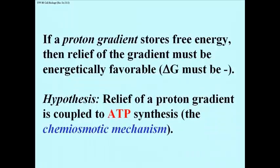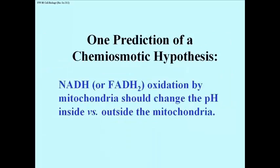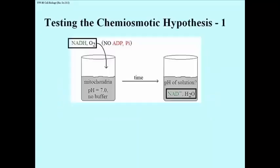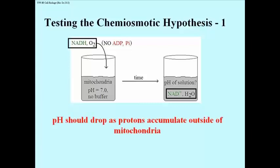Let's look at a prediction and a test of the hypothesis that relief of a proton gradient is coupled to ATP synthesis in mitochondria. Here's one prediction: when isolated mitochondria oxidize NADH or FADH2, the pH of the solution around the mitochondria should change relative to inside the mitochondrion. If respiratory substrates — specifically NADH and oxygen — are added to the mitochondria, the pH of the solution outside the mitochondria should drop as the solution accumulates protons pumped out of the matrix.